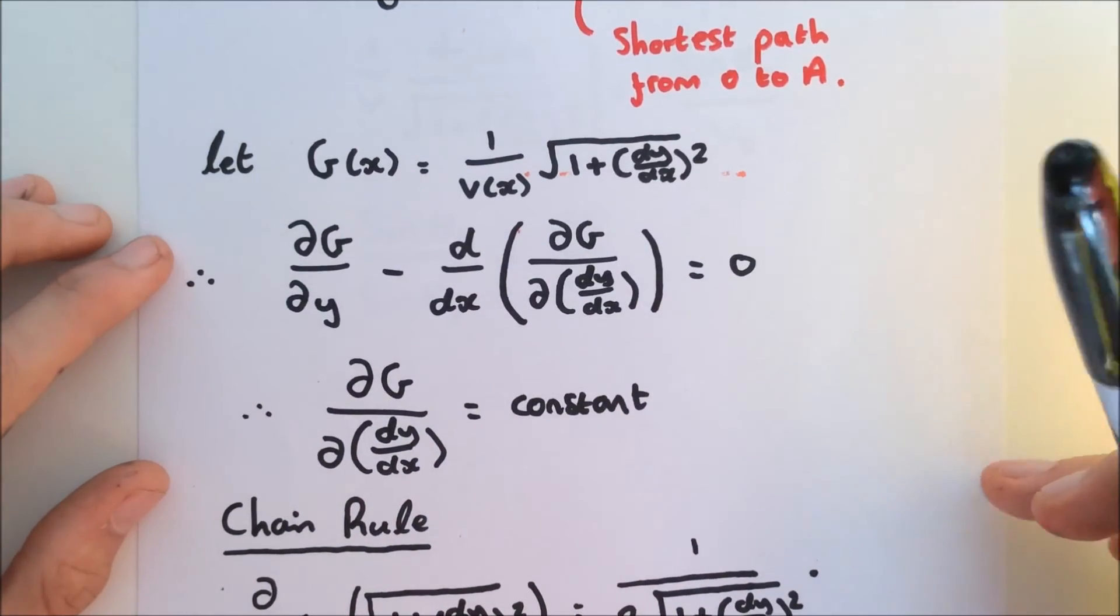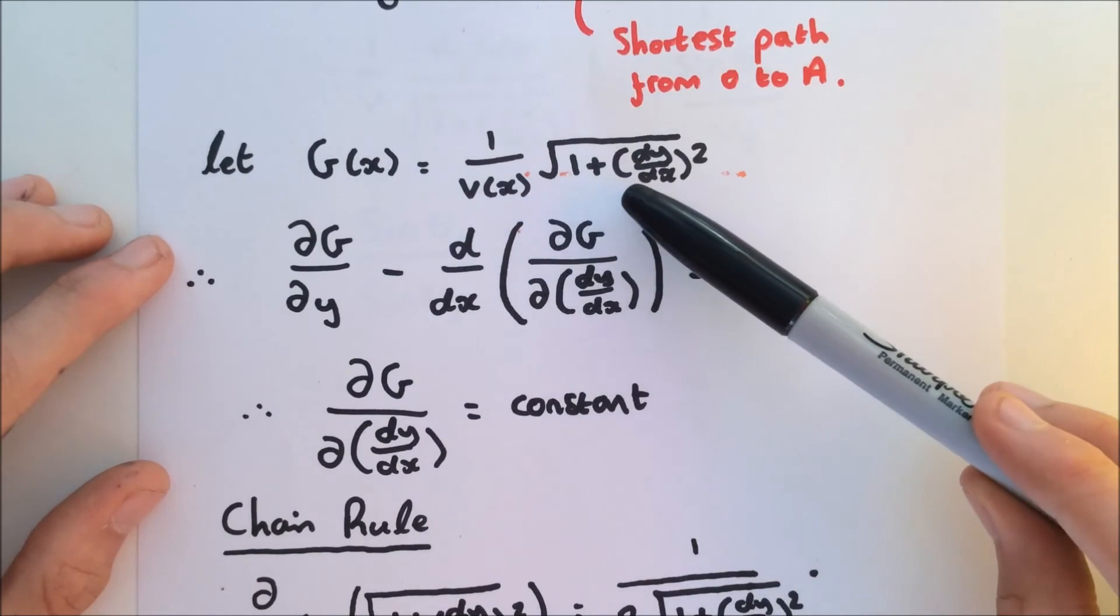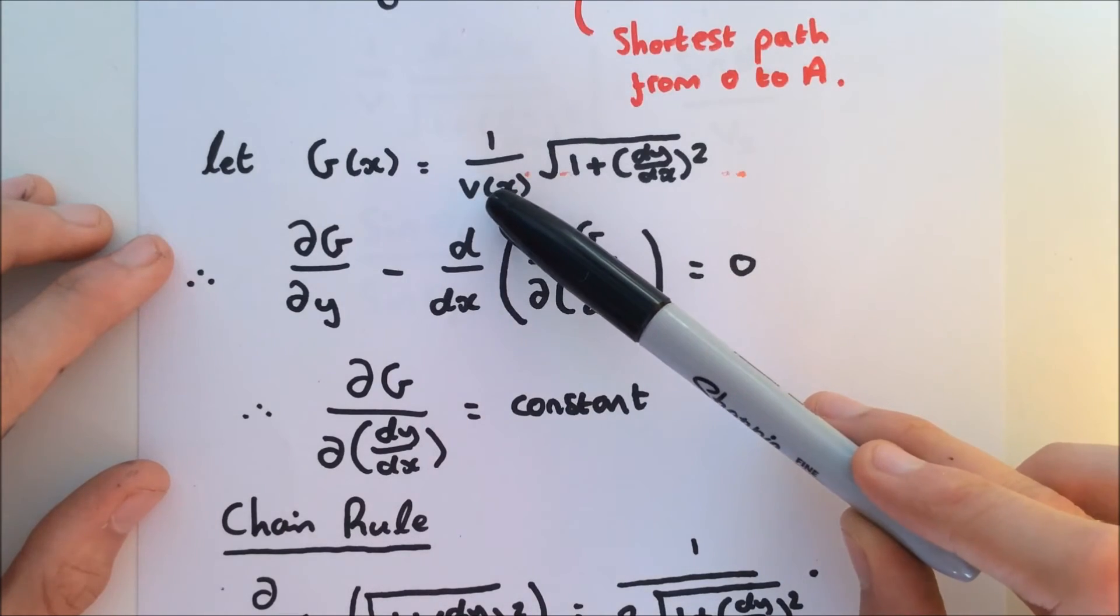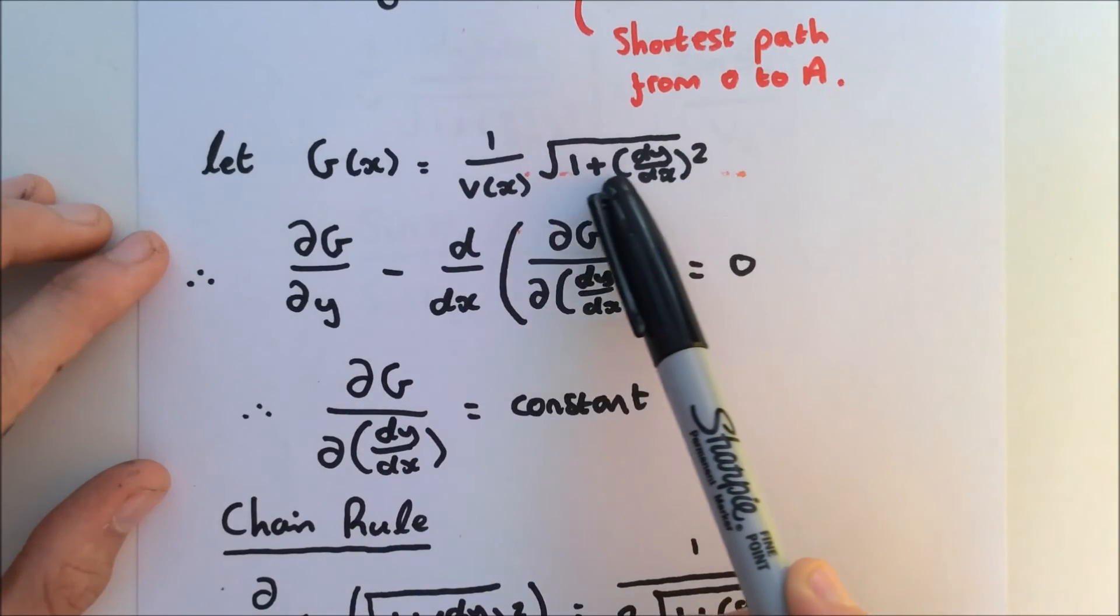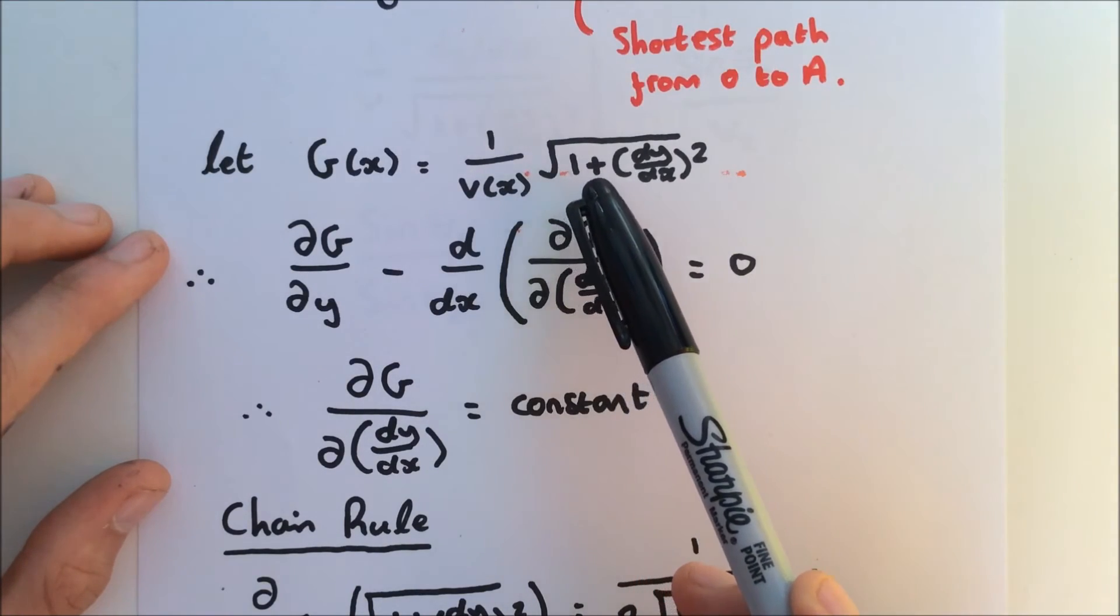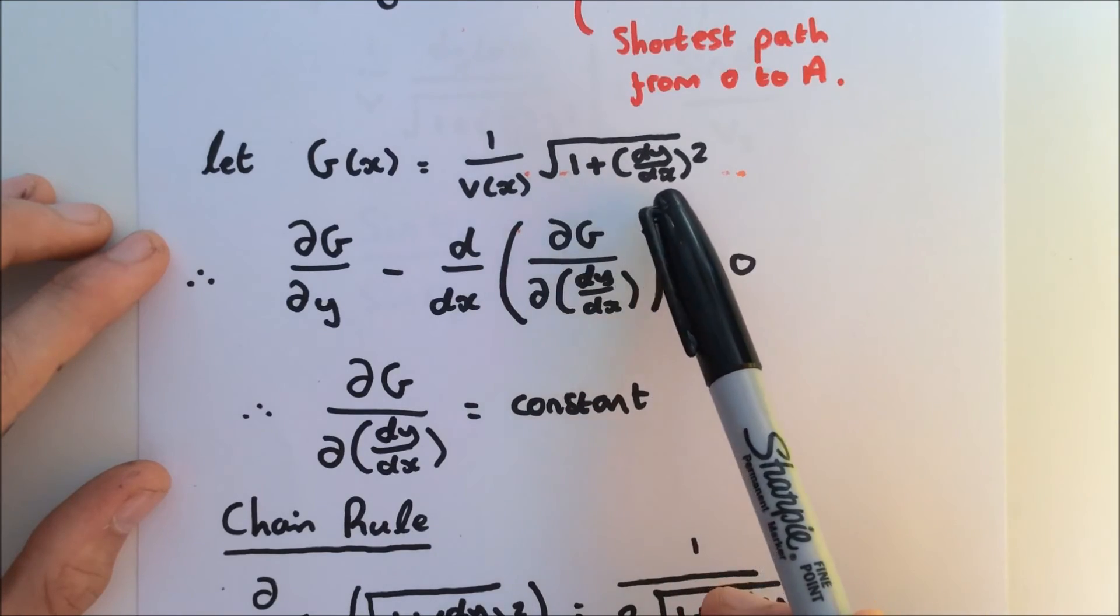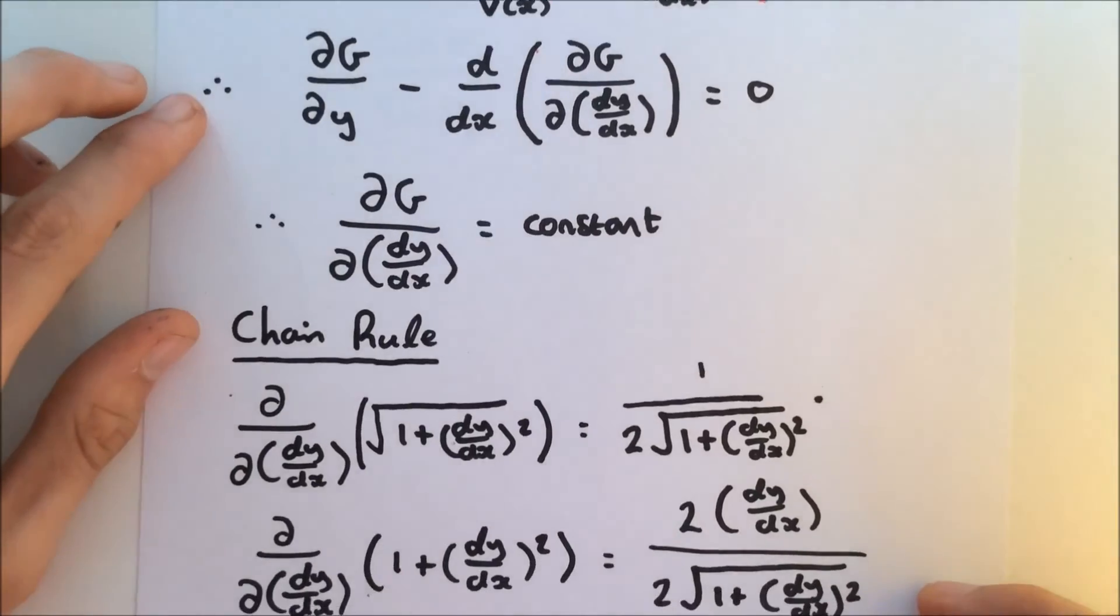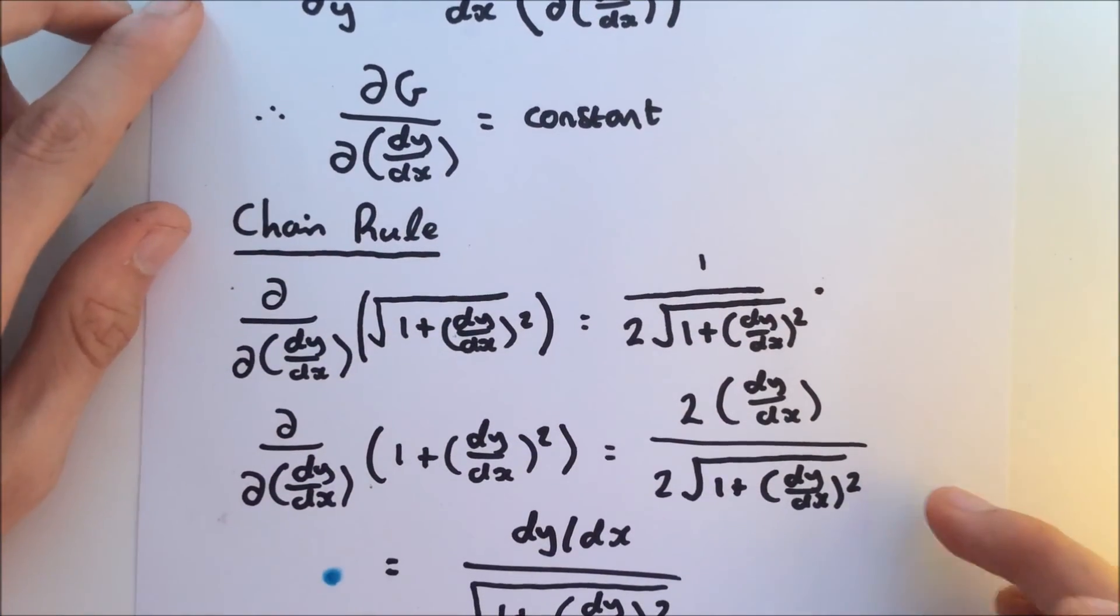So all we need now is to differentiate G with respect to dy/dx. Now, 1 over vx is a constant, so we're only dealing with this. How do we differentiate the square root of 1 plus dy/dx squared? We can use the chain rule. So basically, we first differentiate this root.